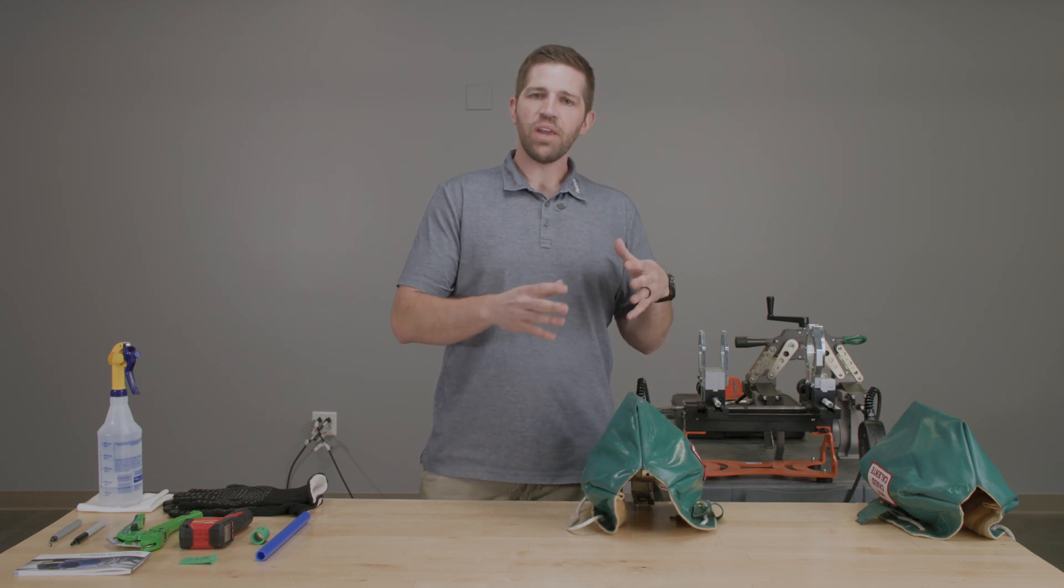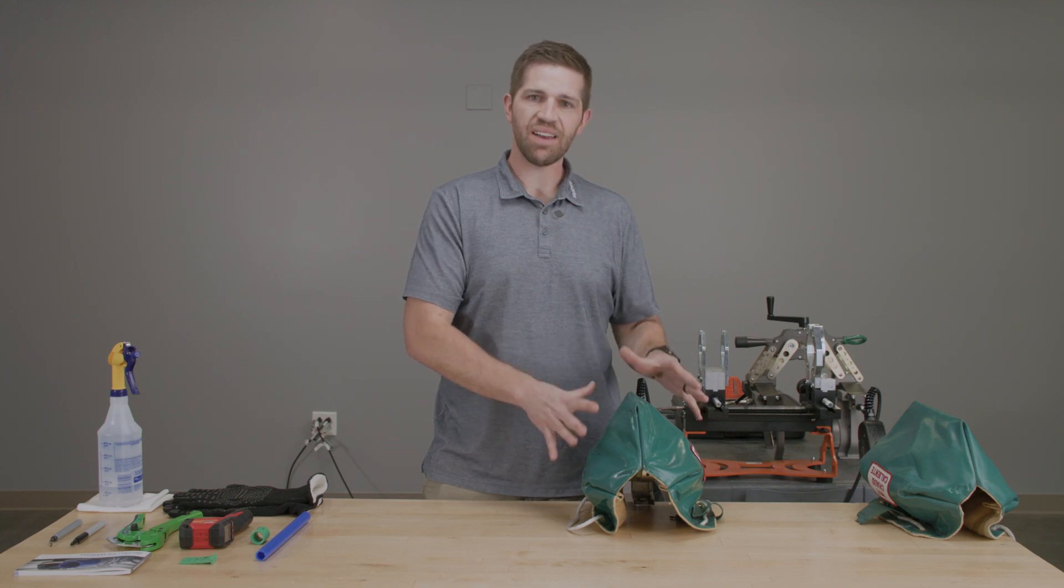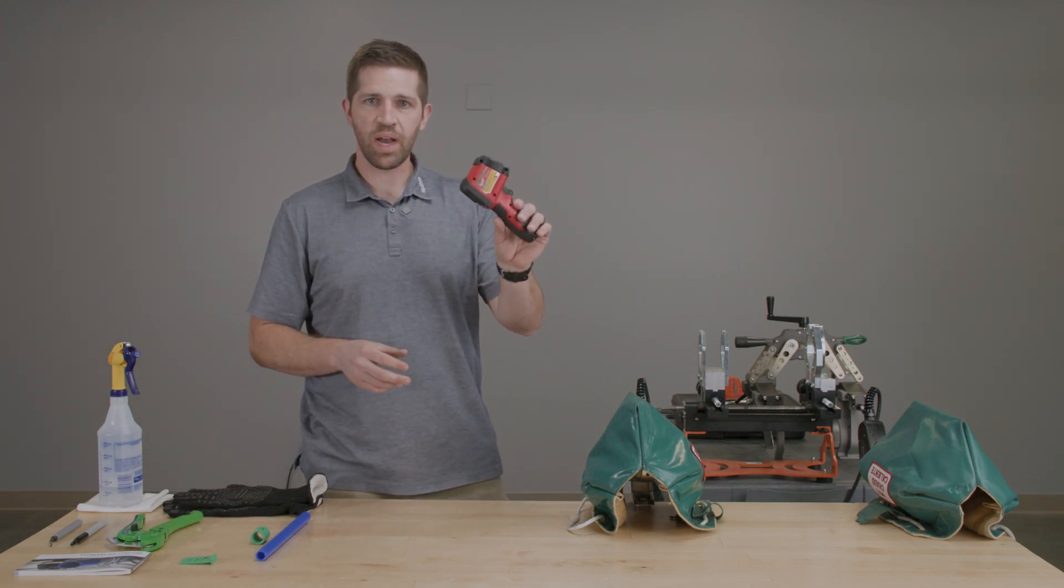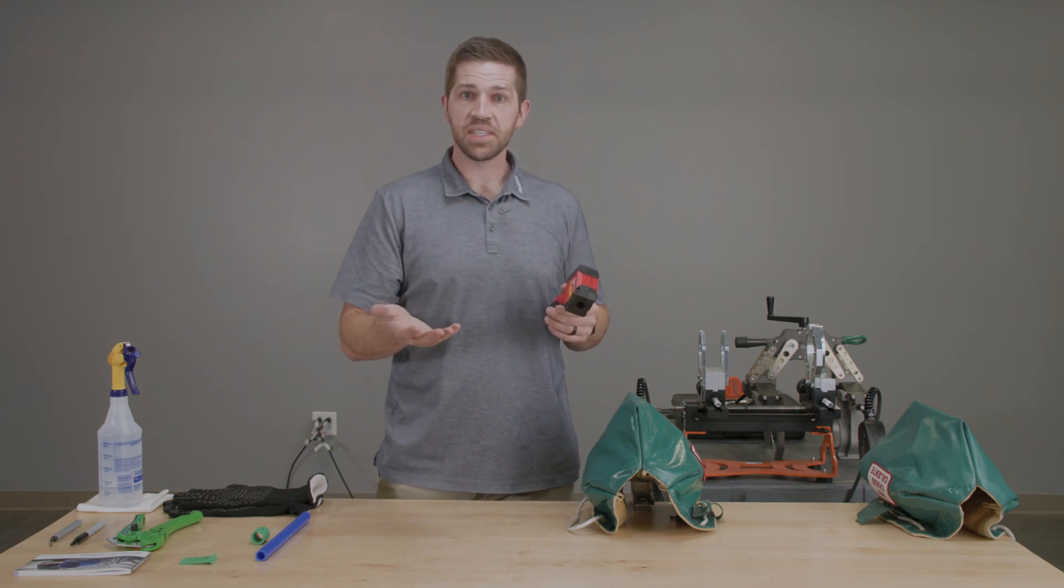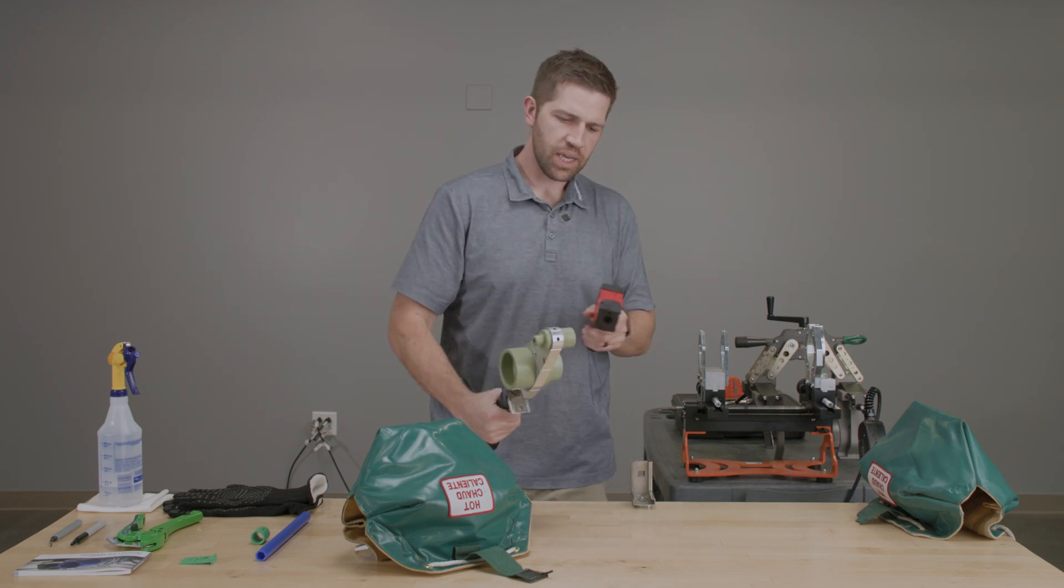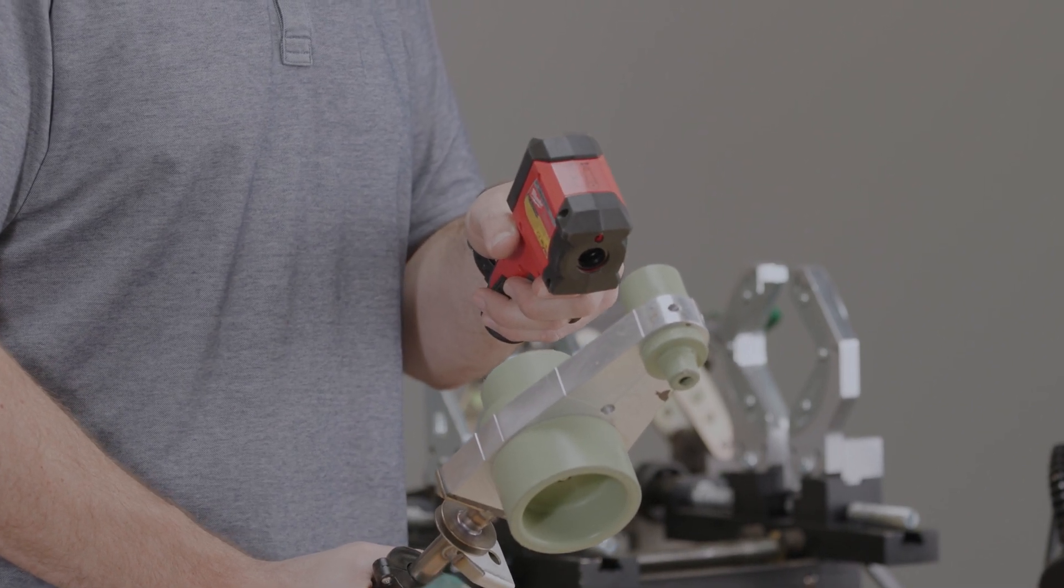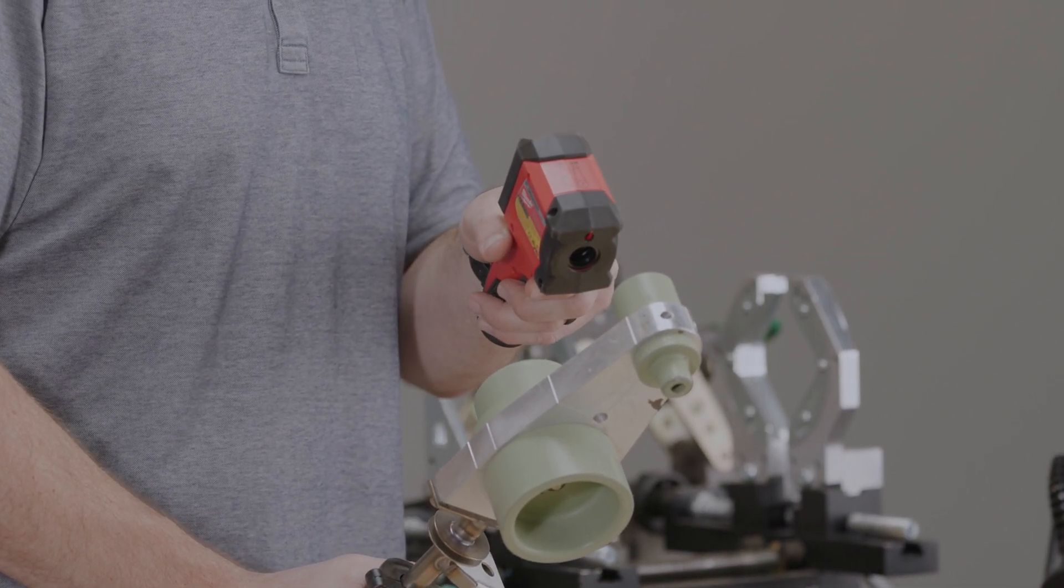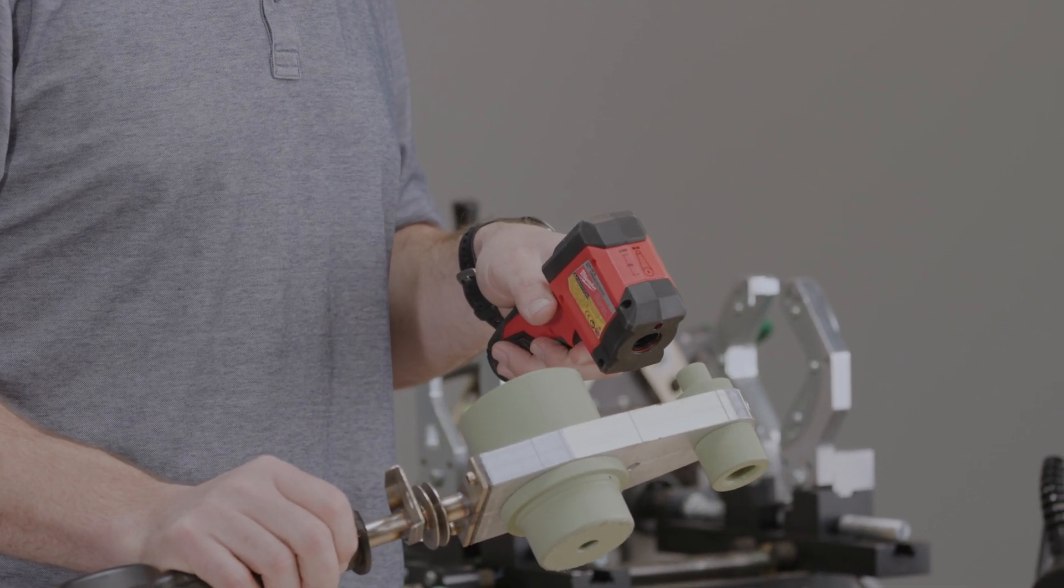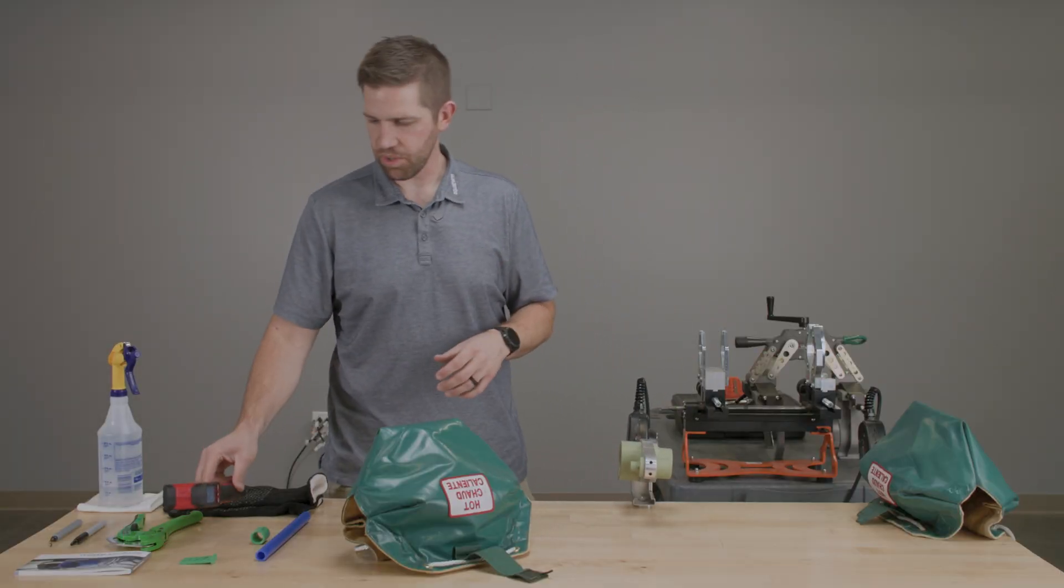When these irons are plugged in, we need to wait for them to get to the appropriate temperature. For socket fusion, that temperature should be 500 degrees plus or minus 18 degrees Fahrenheit. Make sure you have a thermometer, whether that's an infrared thermometer or a contact pyrometer, to check that temperature. I'm getting a good reading, right under 500 degrees. I'm going to check it on both sides - 497 degrees. Our irons are heated up and ready to proceed.